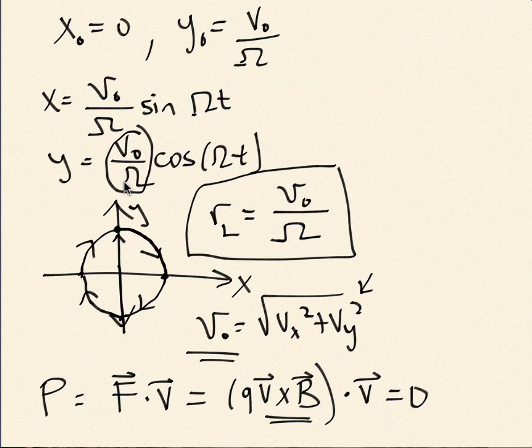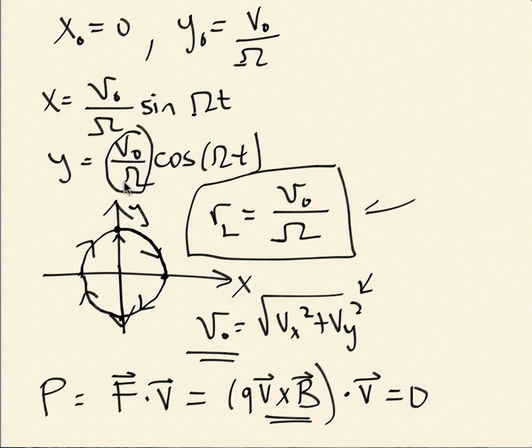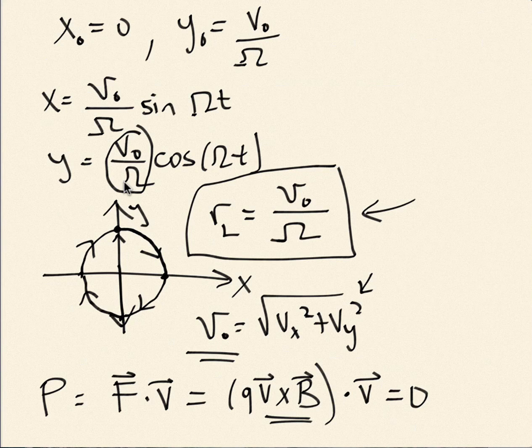Okay, now I'll spend more time in class talking about intuition, physical intuition. I'll go through another way to think about how this orbit is circular, and we'll talk about why the gyro radius scales the way it does and why the gyro frequency scales the way it does. But I just wanted to go through the mathematics with you here so I don't have to do it in class. Okay, I'll stop there.